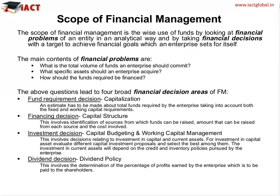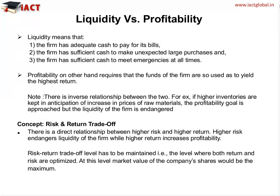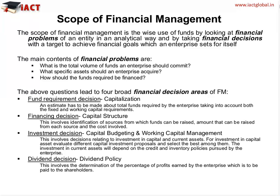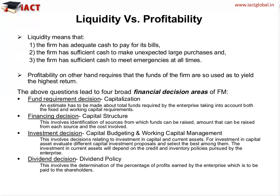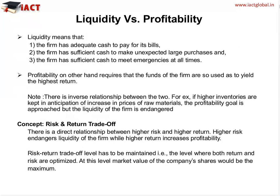Moving to the next slide — the concept of liquidity versus profitability. When we covered the objectives of financial management, we noted the maintenance of adequate liquid assets, where we need a balance between liquidity and profitability. Liquidity means the firm has adequate cash to pay its obligations and liabilities, sufficient cash to make unexpected large purchases, and sufficient cash to meet any emergency at any time.